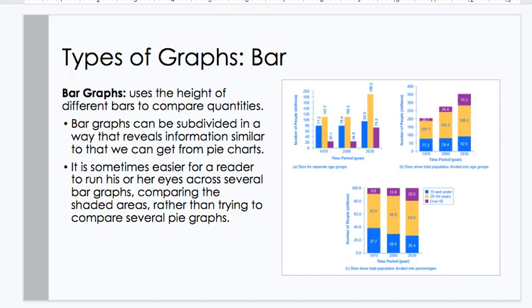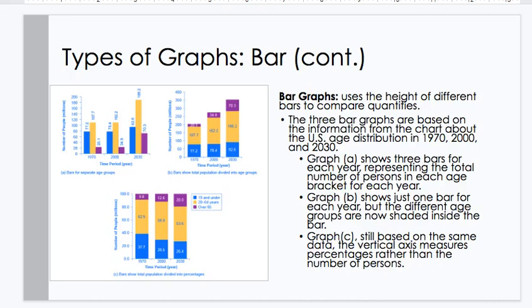Types of graphs, bar charts, or bar graphs, use the height of different bars to compare quantities. Bar graphs can be subdivided in a way that reveals information similar to what we can get from pie charts. It's sometimes easier for a reader to run his or her eyes across several bar graphs, comparing the shaded areas, rather than trying to compare several pie graphs. Continuing with this, the three bar graphs are based on the information from the chart about the U.S. age distribution in 1970, 2000, and 2030. Graph A shows three bars for each year, representing the total number of persons in each age bracket for each year. Graph B shows just one bar for each year, but the different age groups are now shaded inside the bar. Graph C, still based on the same data, the vertical axis measures percentages rather than numbers of persons.